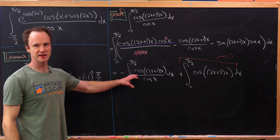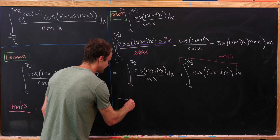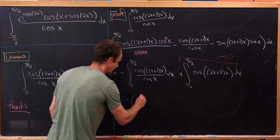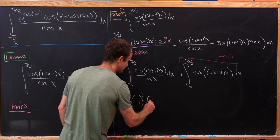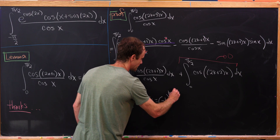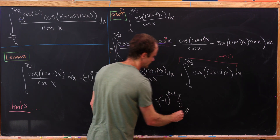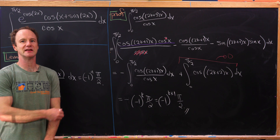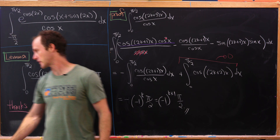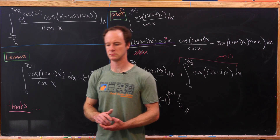Applying the induction hypothesis gives us minus times minus 1 to the k times pi over 2, which simplifies to minus 1 to the (k+1) times pi over 2. That's exactly what we needed to finish the induction proof, completing the proof of this lemma.